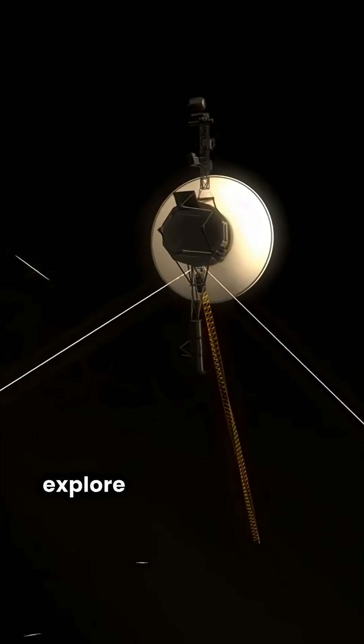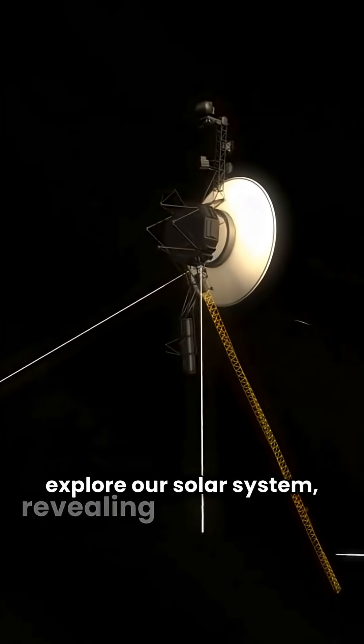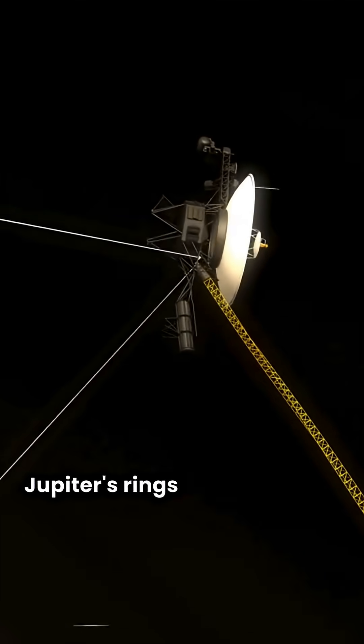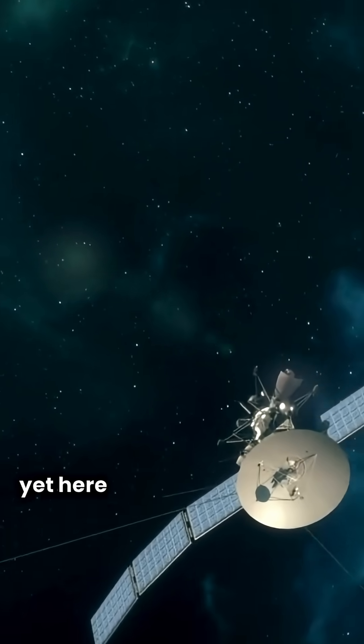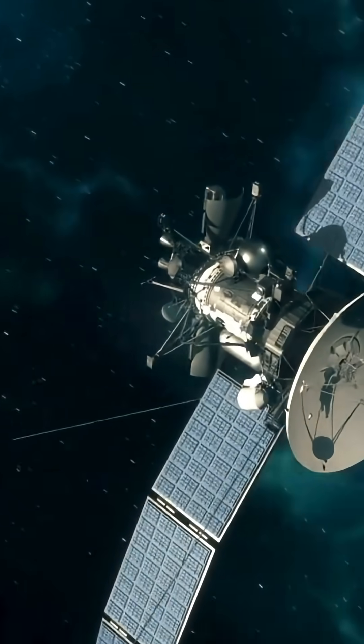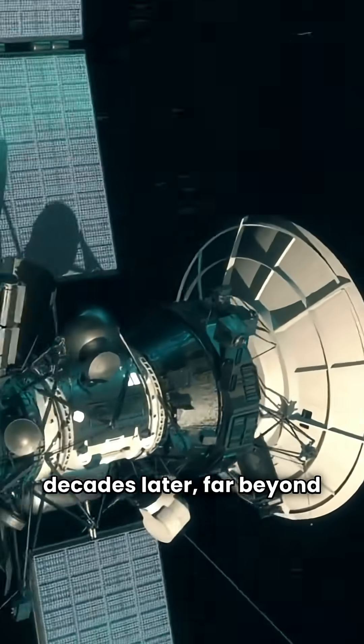Voyager 1 and 2 were launched to explore our solar system, revealing wonders like Jupiter's rings and Neptune's great dark spot. They were designed for a brief mission, yet here they are, still sending data decades later, far beyond expectations.